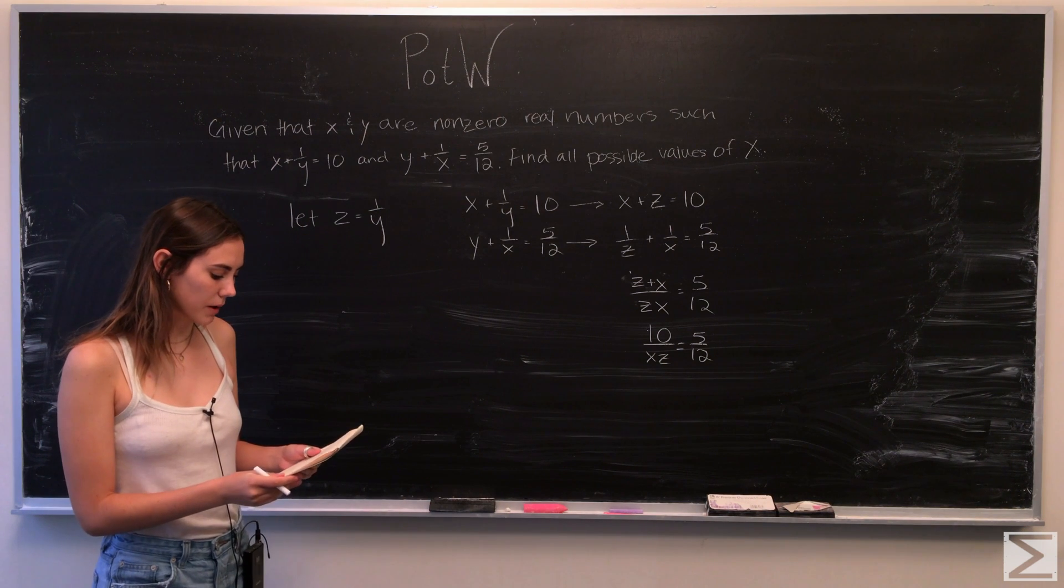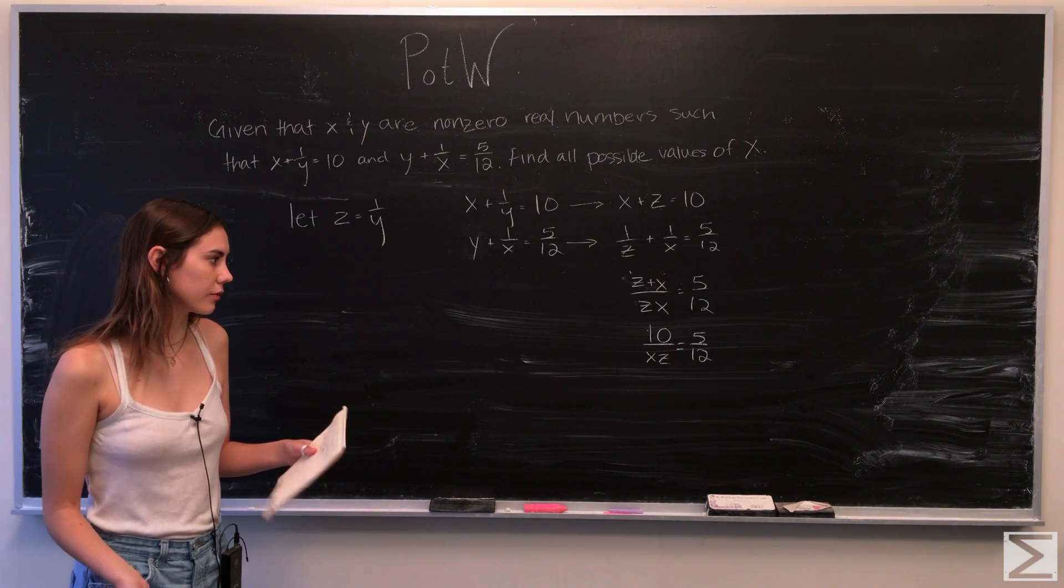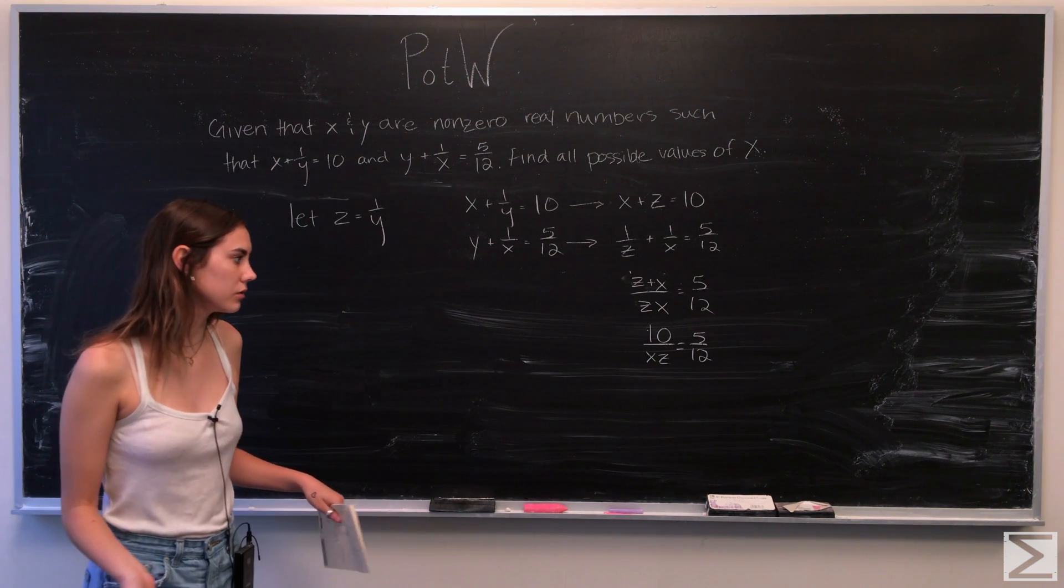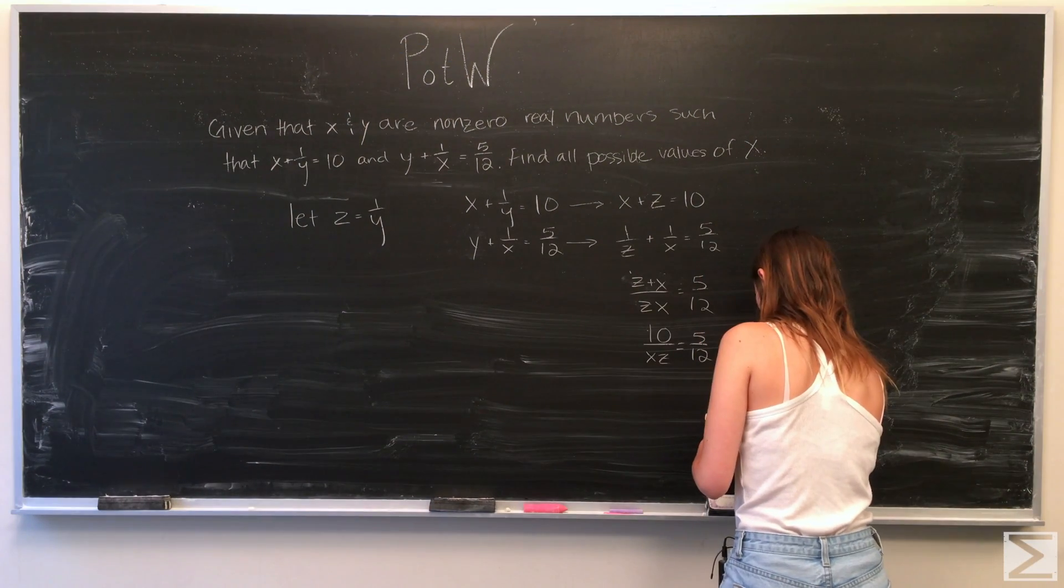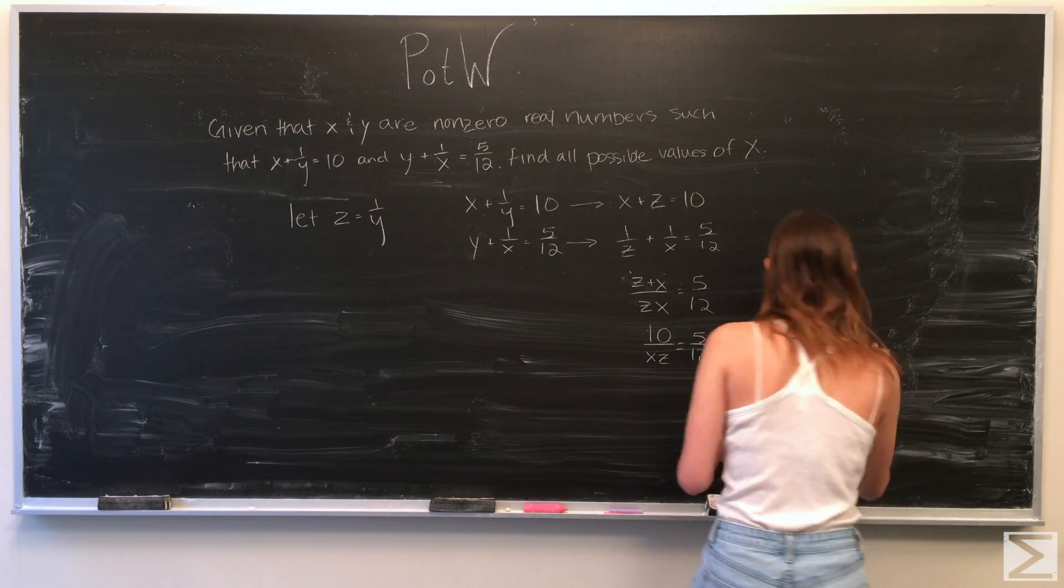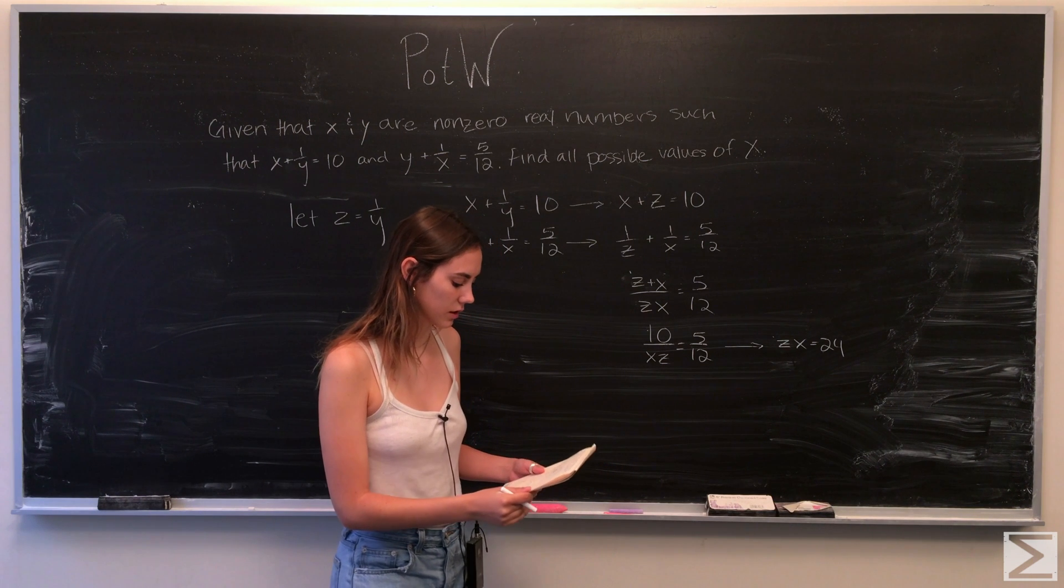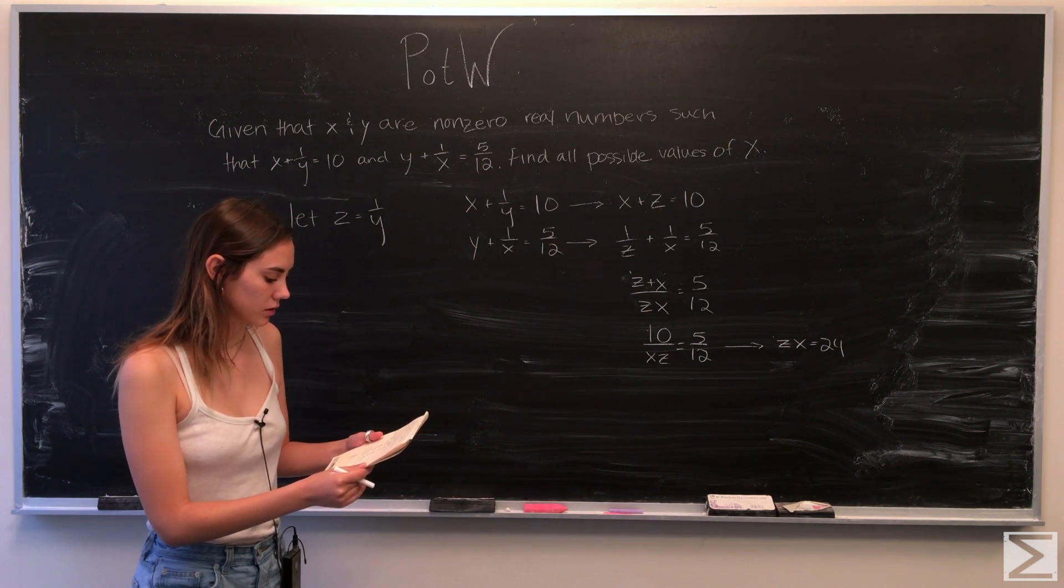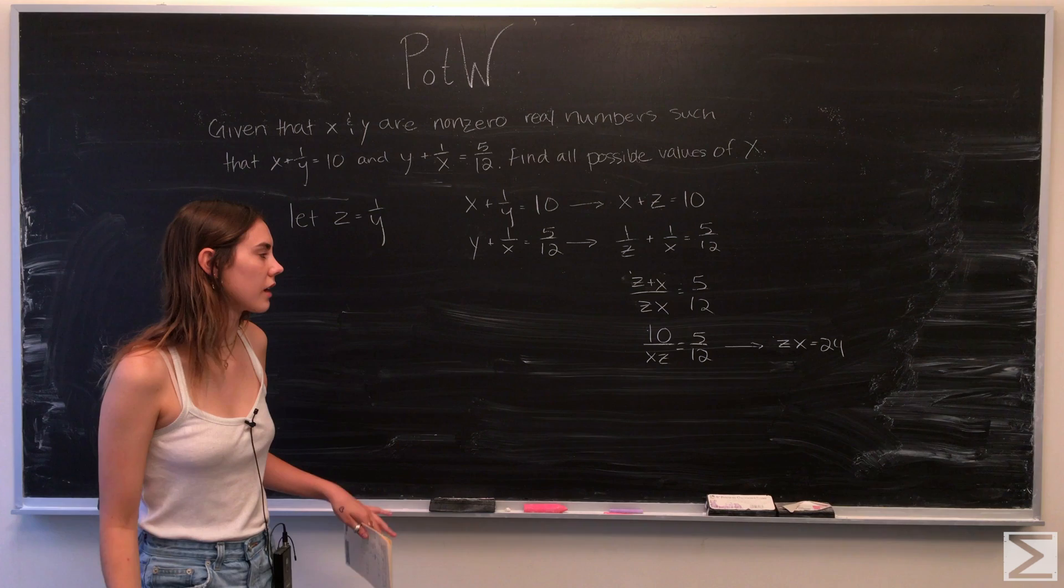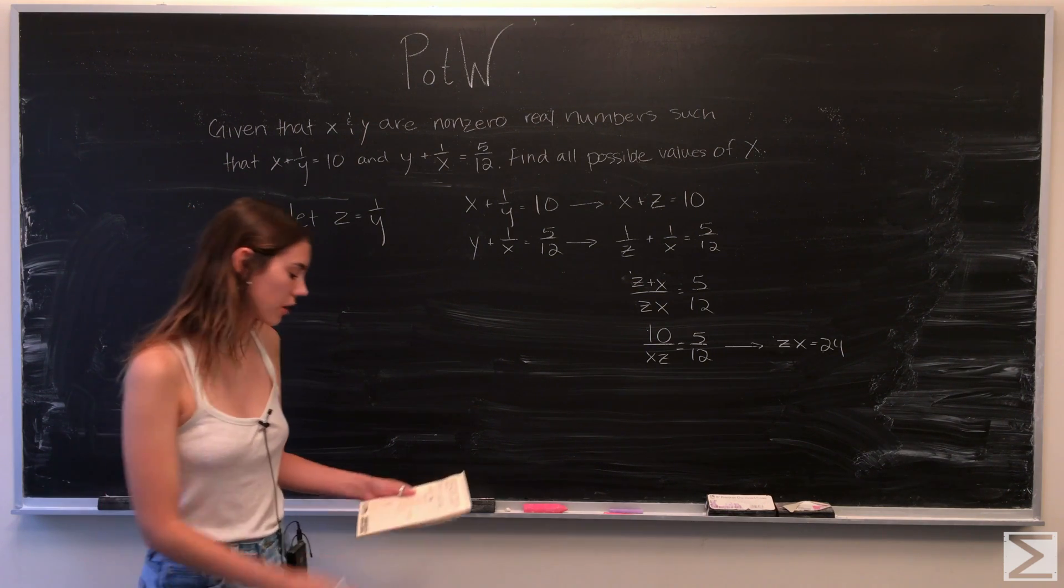And simplifying a little bit more, we can come up with an equation for what zx is equal to. So we get that zx is equal to 24, and therefore we can substitute back in and solve for some other variables.